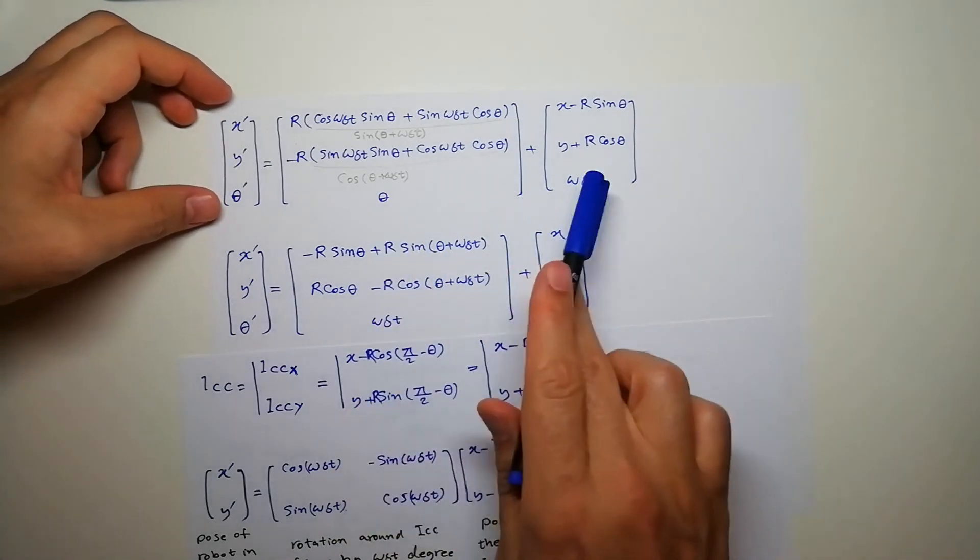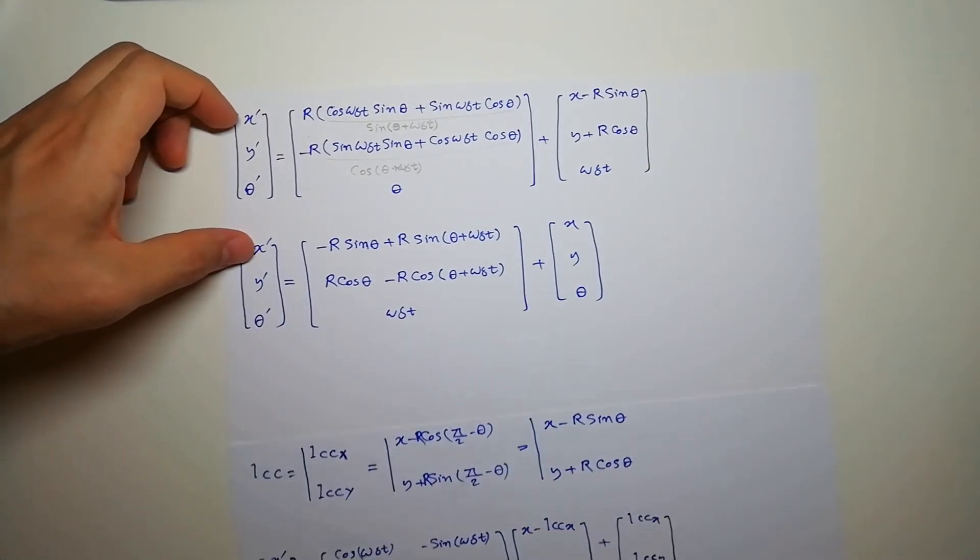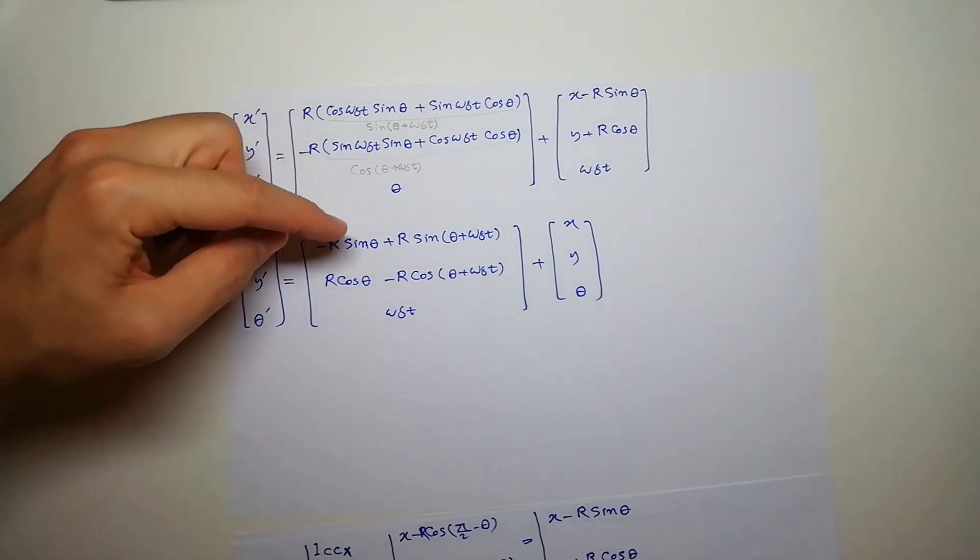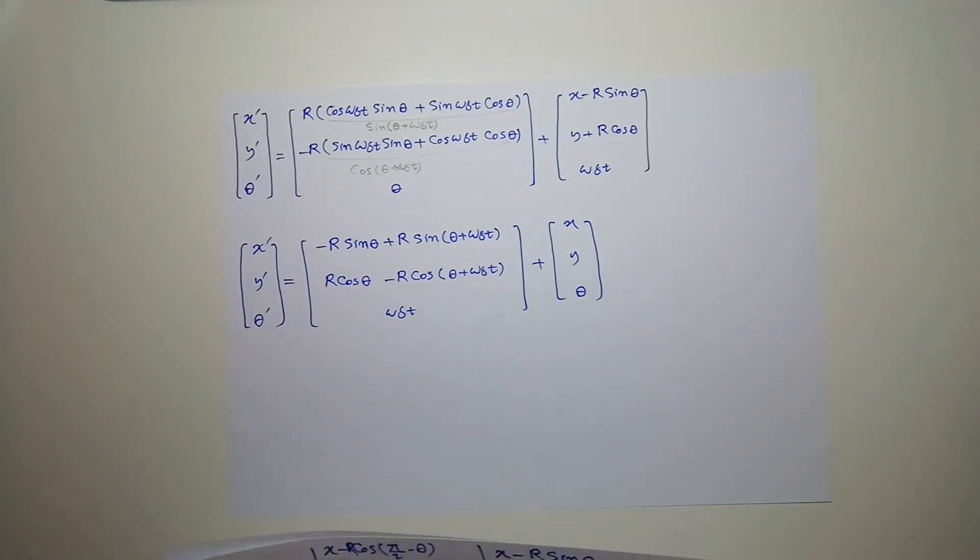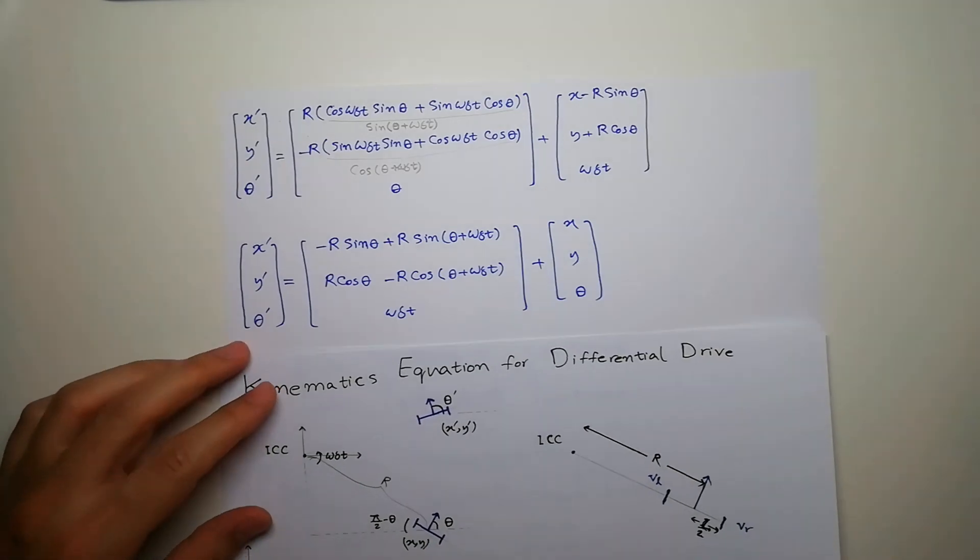So if I add this term to this term, I can find the pose of the robot in the world coordinate system based on the angle that we have rotated the robot, which is this one here.